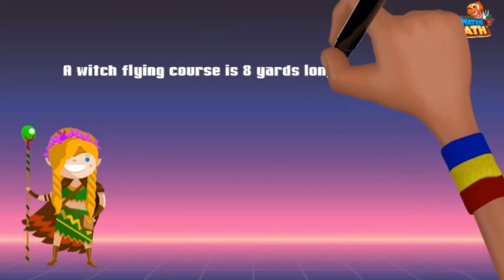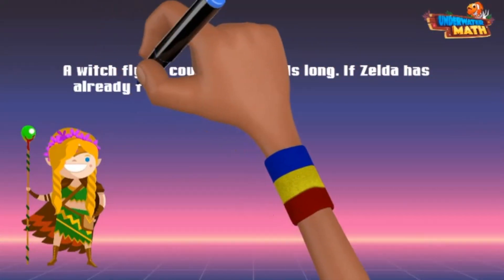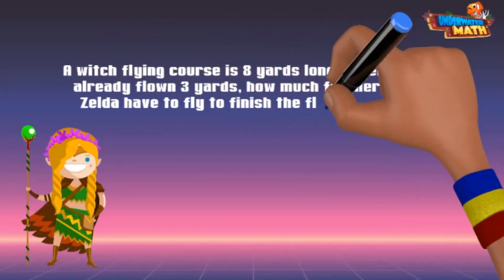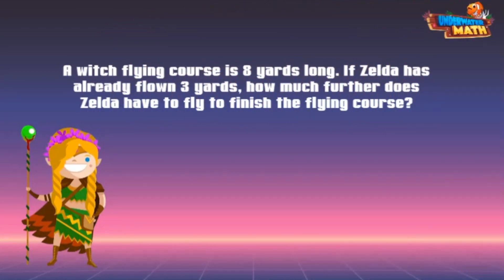On to the next. A flying course is 8 yards long. If Celda has already flown 3 yards, how much further does Celda have to fly to finish the flying course? The keywords are "how much further," and we'll use subtraction to find this answer.